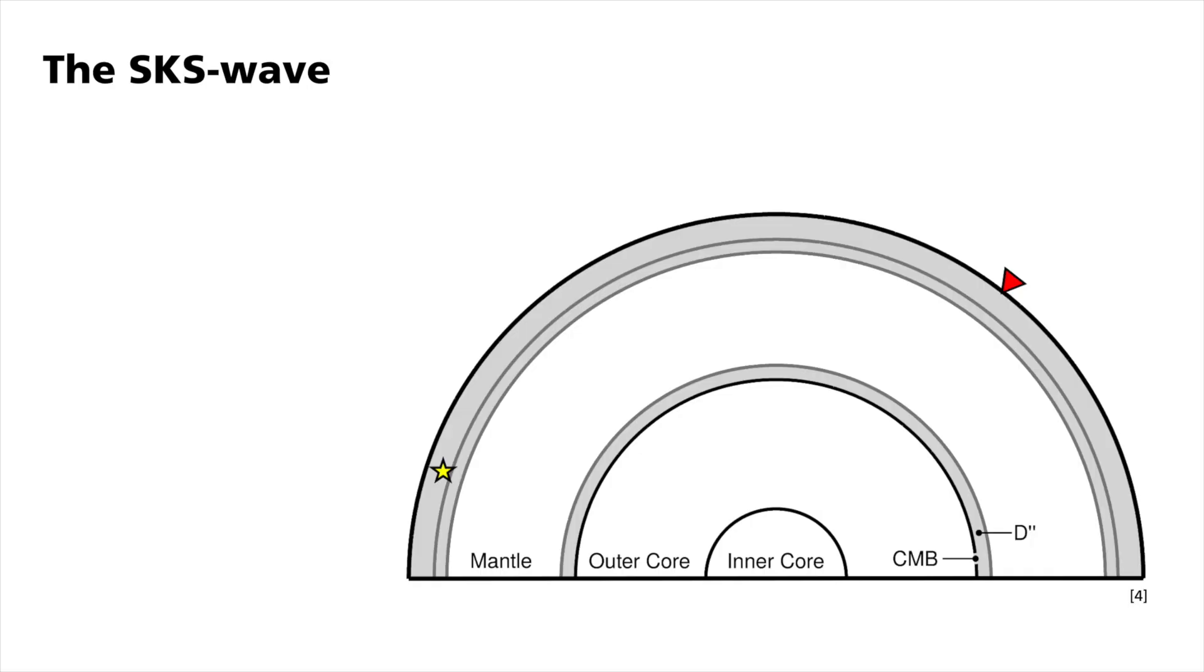Earthquakes radiate seismic waves that travel through the Earth and they are named corresponding to their waves through different layers. The wave most commonly used to study shear wave splitting is the SKS phase. It travels from the earthquake source down to the core-mantle boundary, short CMB, as a shear or S-wave.